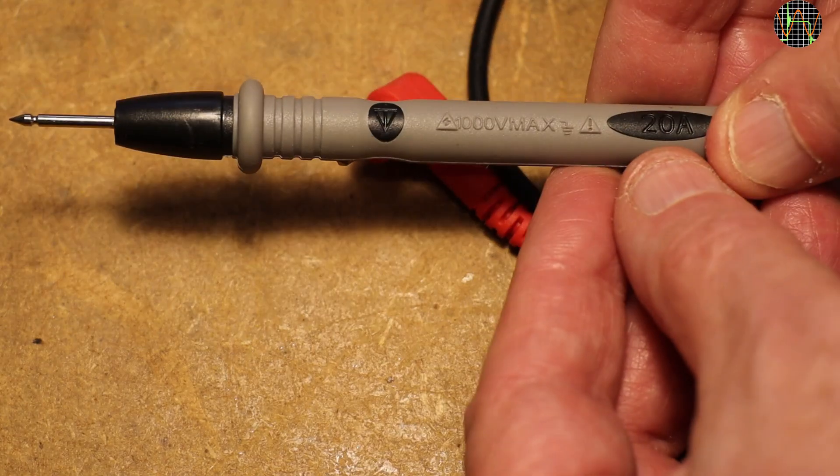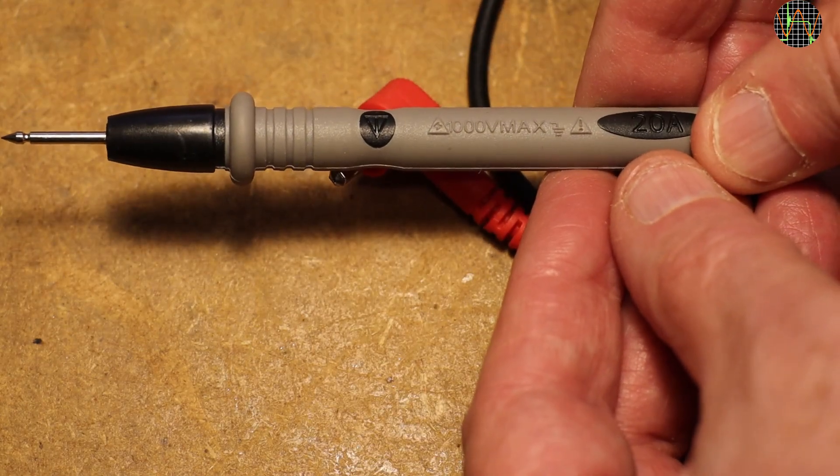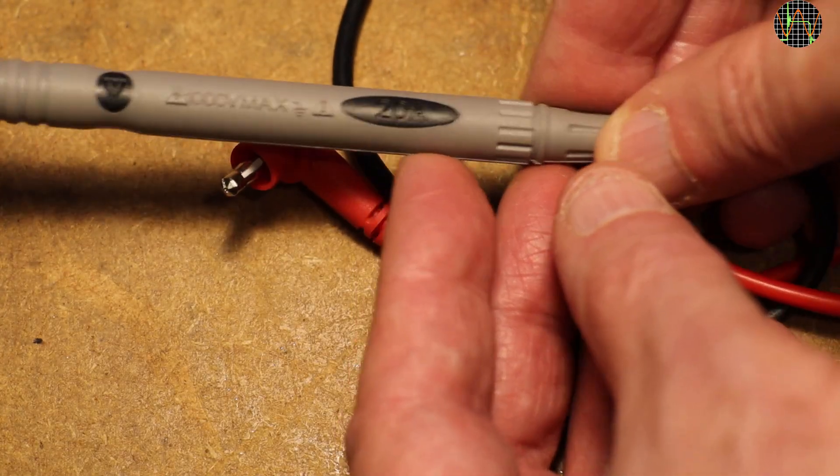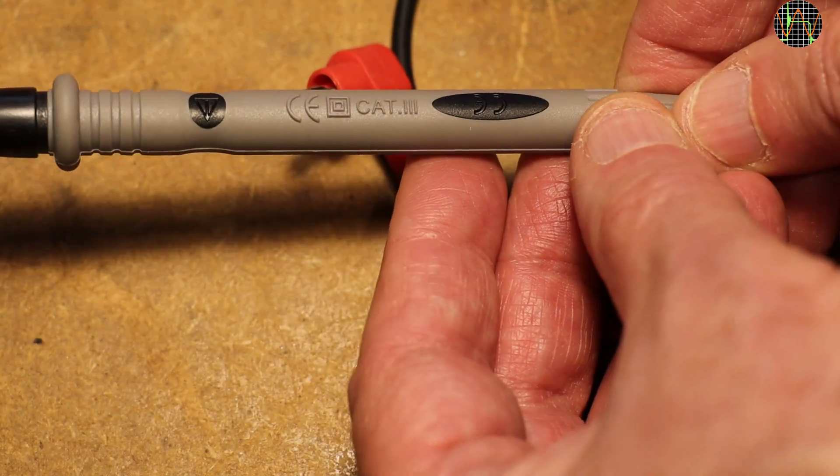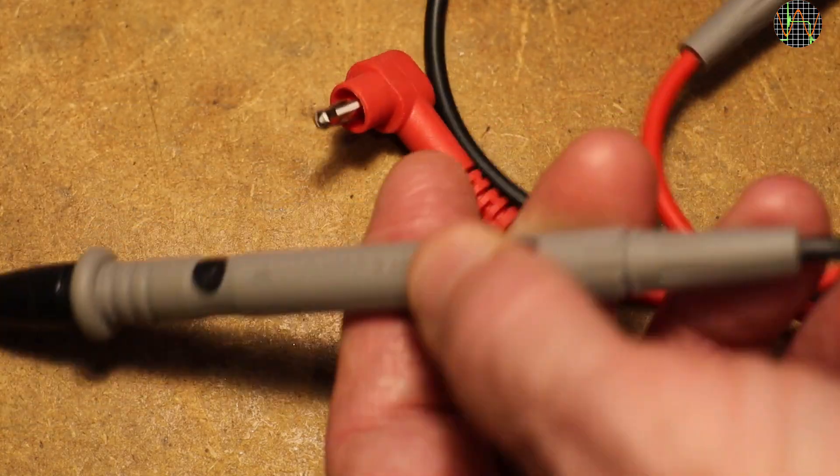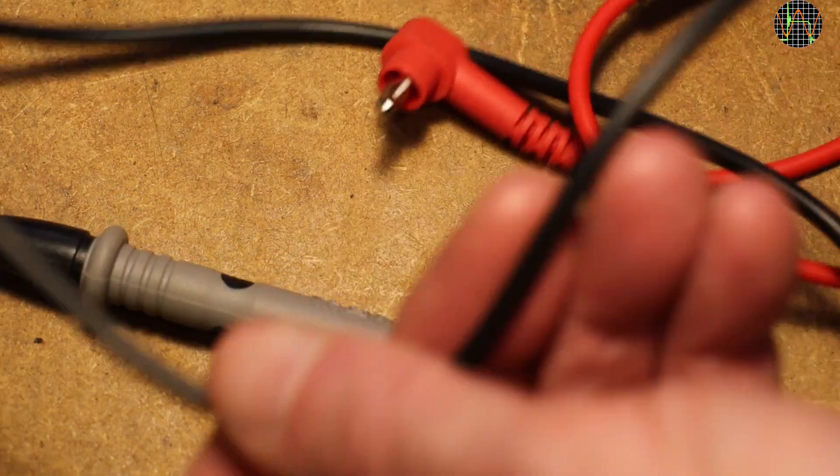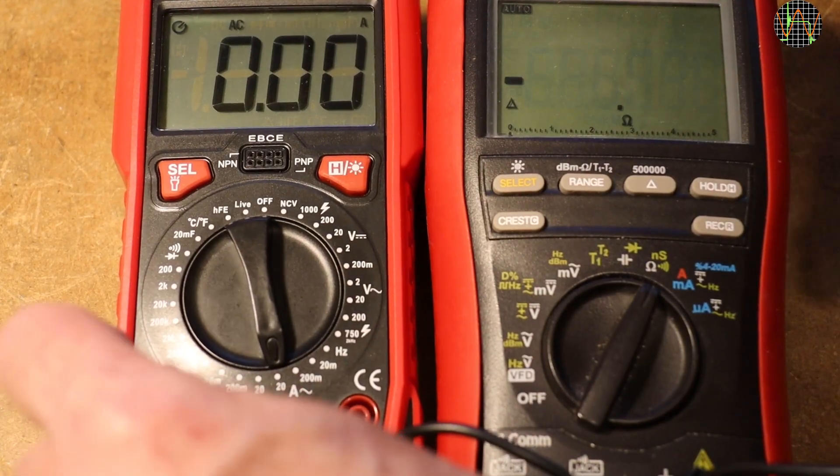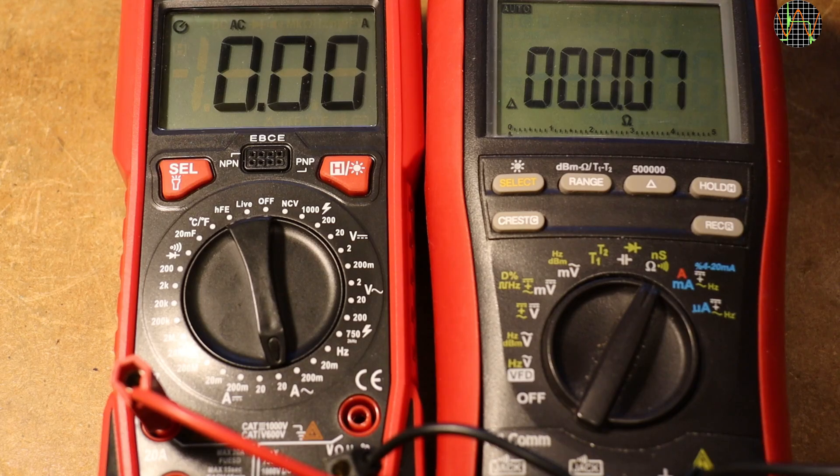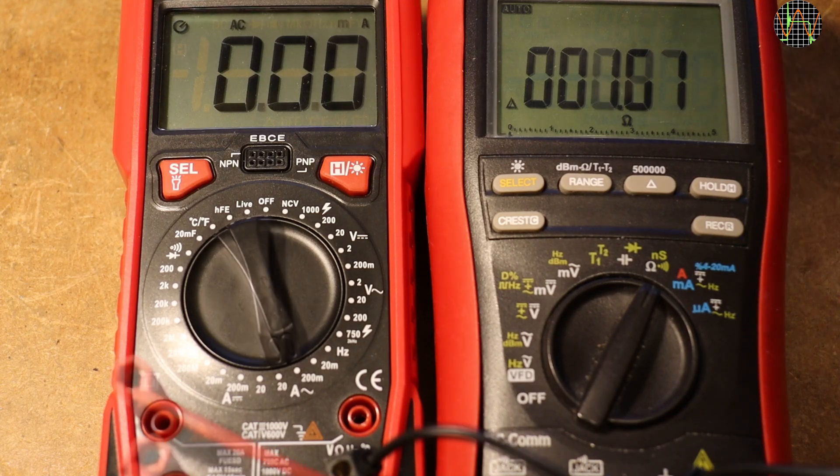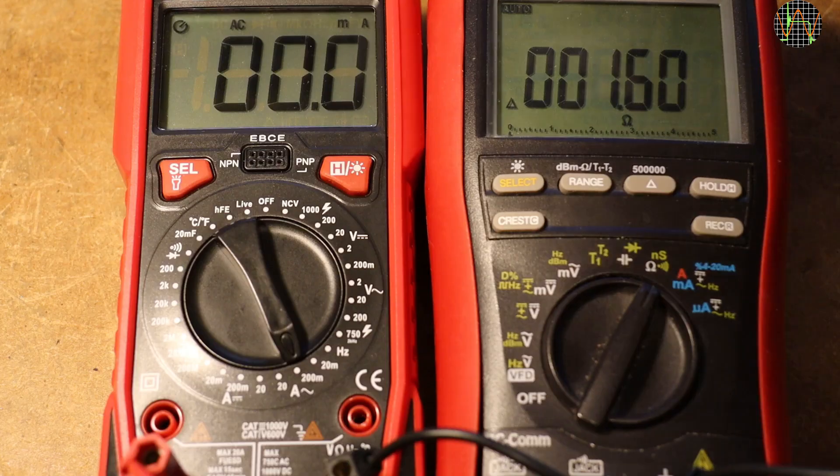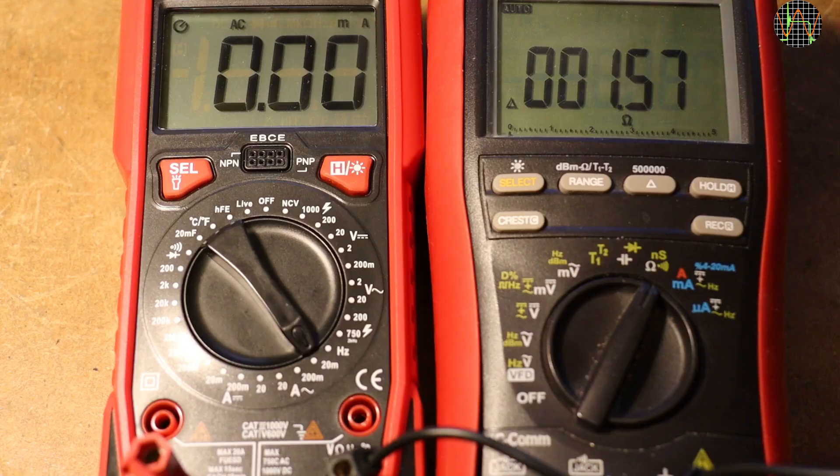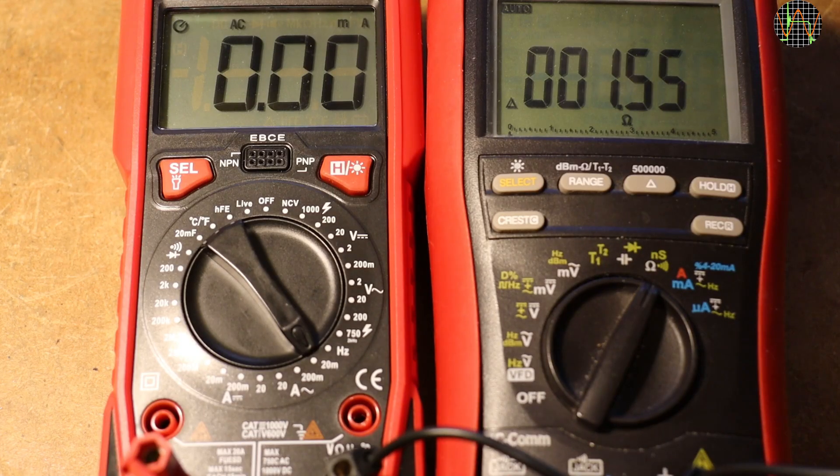Besides those weird plugs, the probes that came with it are marked 1000V and 20A in line with the 20A range of the meter. CAT3 is shown on the other side. No mentioning of CAT4. No markings on the PVC cables. A quick check on burden resistances. The 20A range measures 0.07 Ohm. 200mA has 1.6 Ohms. And 20mA the same. These are actually not too bad values.